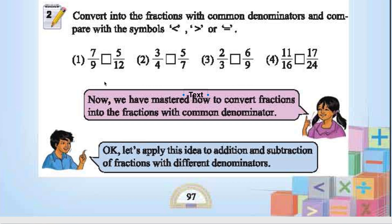So 7 by 9 is greater than 5 by 12. For the next pair, multiply by 7 to get 21 by 28, and multiply by 3 to get 15 by 28, so 21 by 28 is greater than 15 by 28.